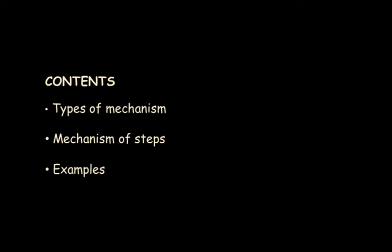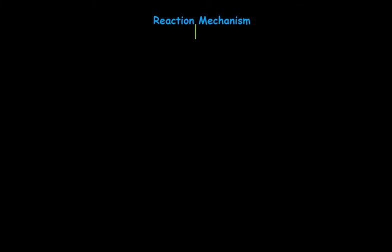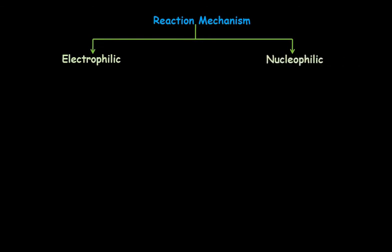First we will start by learning the types of mechanism, then we will learn the mechanism steps of the nucleophilic substitution reaction with some examples. We have learnt about the types of reaction mechanism: one is electrophilic mechanism and the other is nucleophilic mechanism. Out of electrophilic mechanism, we have two types — addition electrophilic and electrophilic substitution. The nucleophilic also has nucleophilic addition reactions and nucleophilic substitution reactions, and in this video we will learn about nucleophilic substitution reactions.